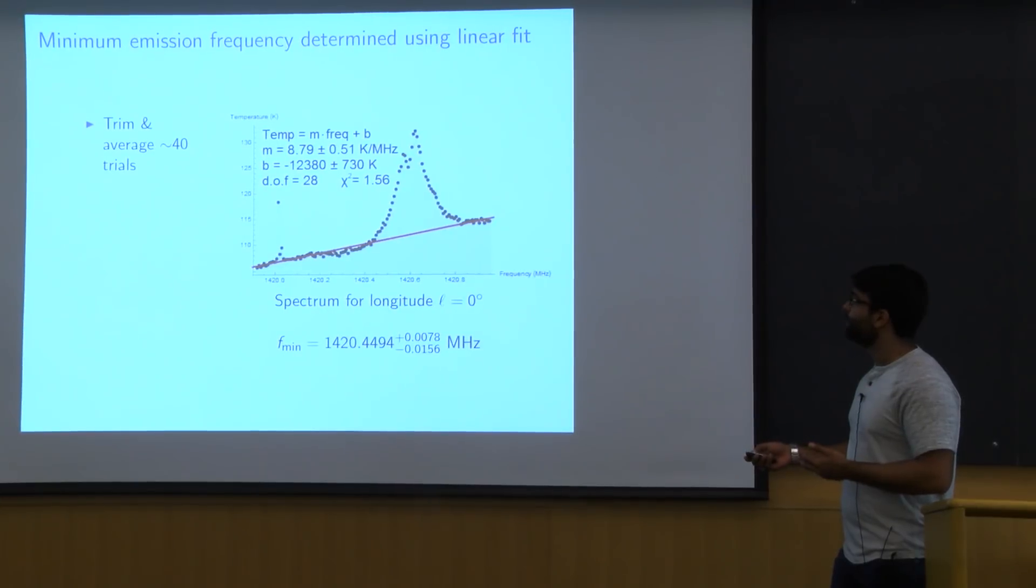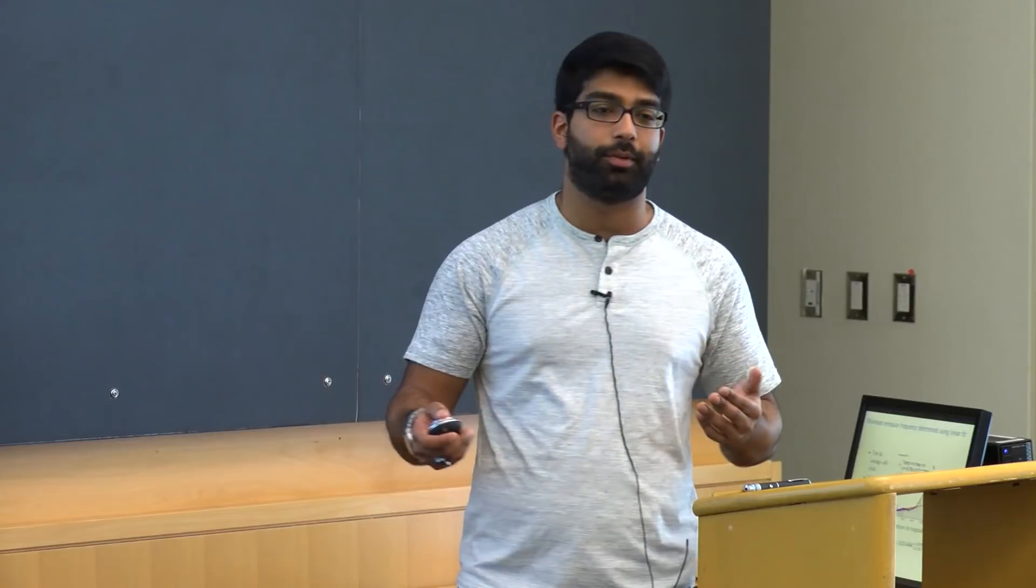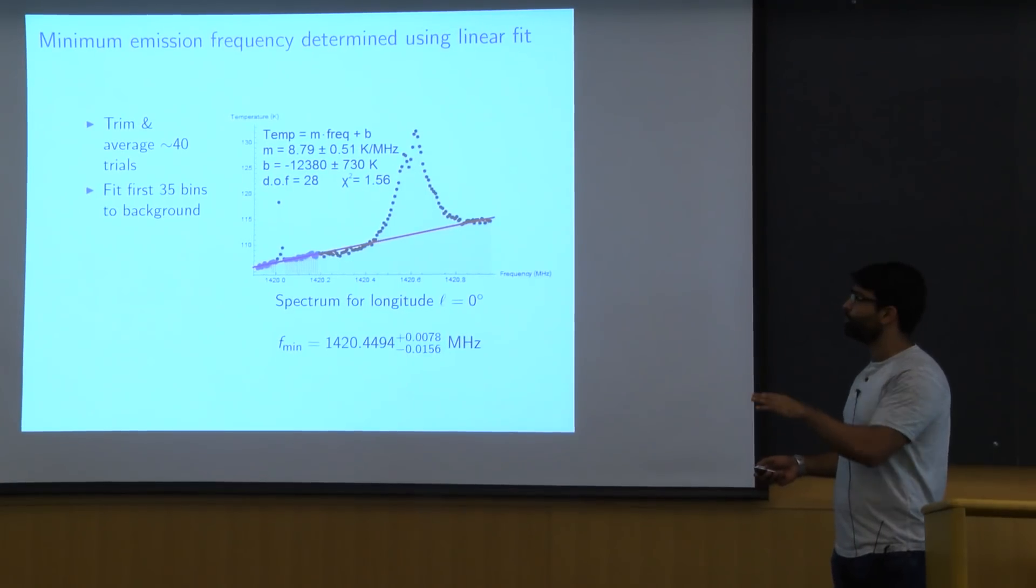So this is what our spectrum looks like. We're going to fit the first few bins to a linear background. And we can see that the background fit is quite good for these initial points. You'll notice here we have this annoying little peak here. This actually shows up in most of our plots. This is probably because of just some constant source that's creating noise. So when we fit this background, we just ignore those points in particular. But for the rest of the points, the fit is quite good.